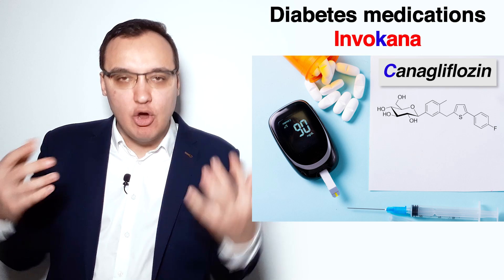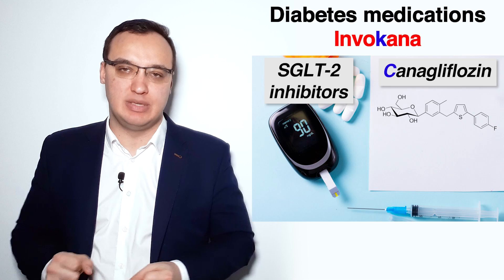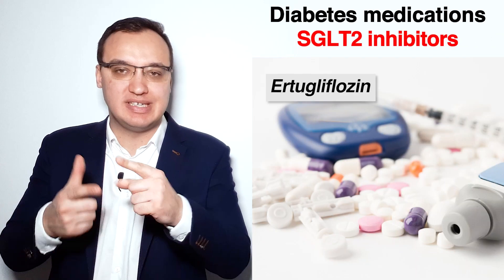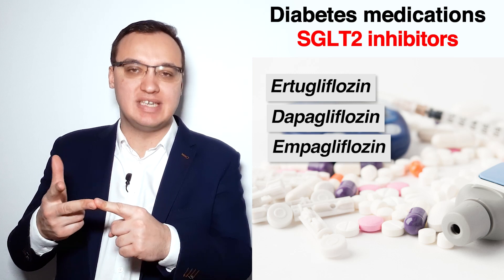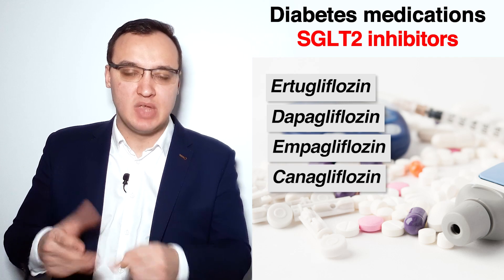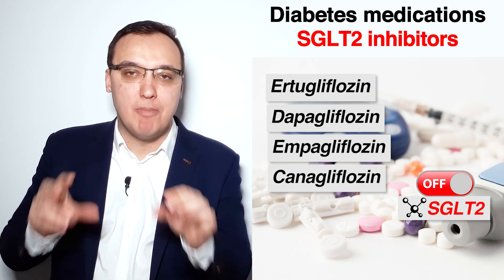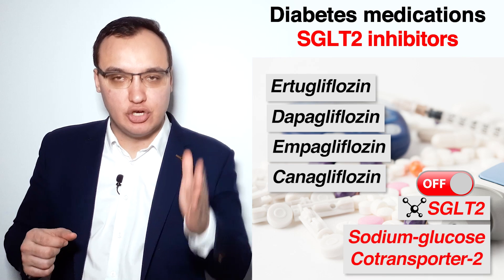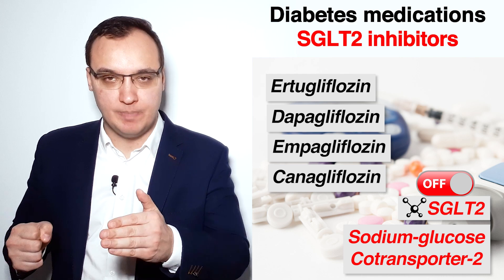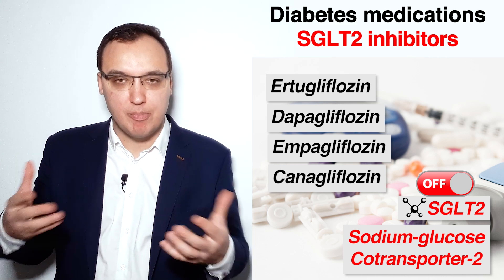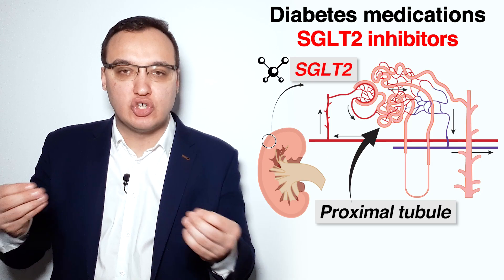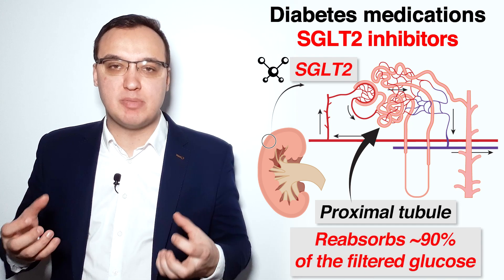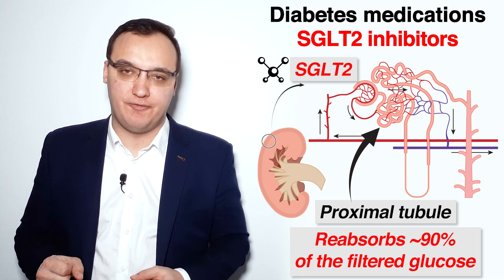Canagliflozin belongs to the family of SGLT2 inhibitors. This group of medications contains Ertugliflozin, Dapagliflozin, Empagliflozin, and Canagliflozin. SGLT2 inhibitors inhibit a molecule called SGLT2, which is an abbreviation of Sodium Glucose Cotransporter 2. This transporter molecule is found on proximal tubules of the kidneys, which usually reabsorbs about 90% of the filtered glucose.